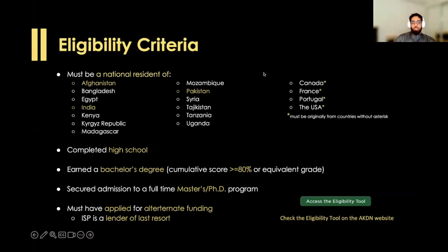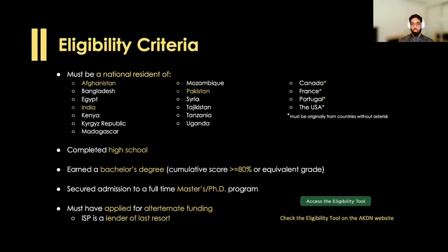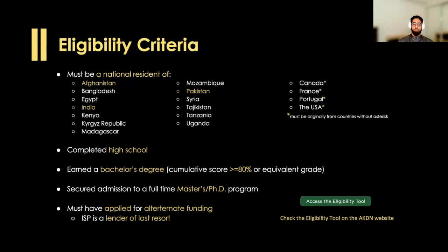Let's look at who can apply. There are specific countries from which applicants are accepted. This year, highlighting Afghanistan, India, and Pakistan — which is where most of our audience would be from — but you can check if your country is on the list. For countries on the far right column, you can be someone residing there, but you must have an original link to the countries in the left two columns. Other requirements: you need to have completed high school and must have a bachelor's degree in hand. This is an important distinction — you need your bachelor's degree in hand. If you are in your final year and haven't completed your degree, you are ineligible.